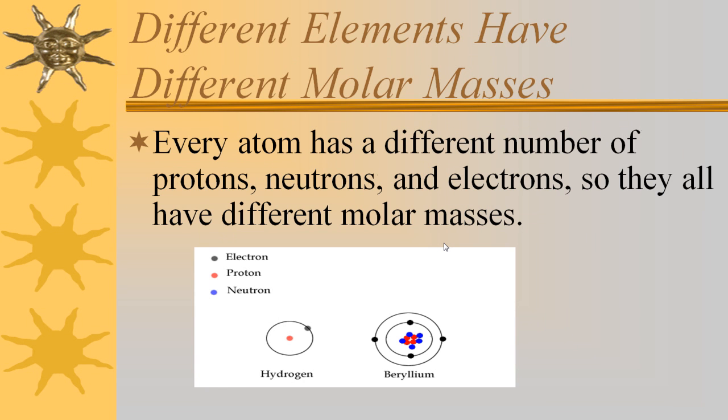Okay, so different elements have different molar masses. Remember that every atom has a different number of protons, neutrons, and electrons. So it makes sense that they would all have different molar masses. For example, hydrogen has one proton, one electron. It has a different molar mass than beryllium, which has four protons, five neutrons, and four electrons.